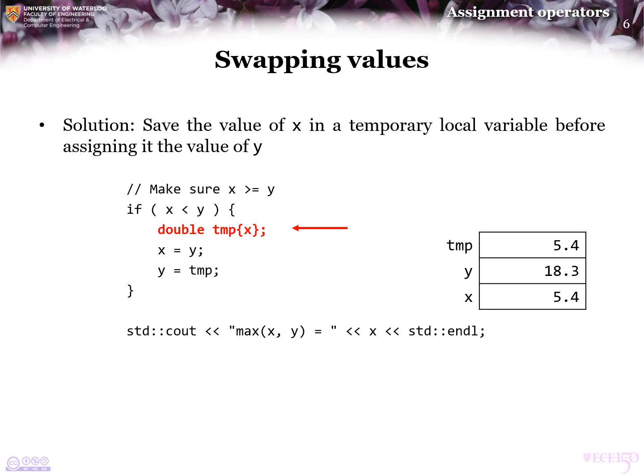The first thing is that there is now a temporary local variable temp that is assigned the value of 5.4. Next, x is assigned the value of y, which is 18.3, and finally, we assign y the value of temp, which is 5.4.